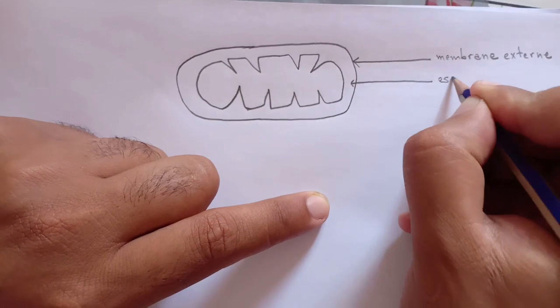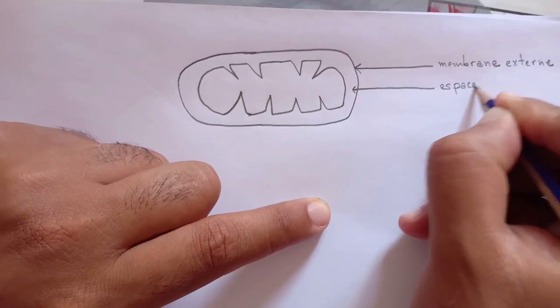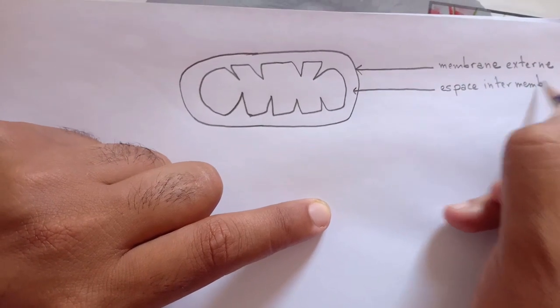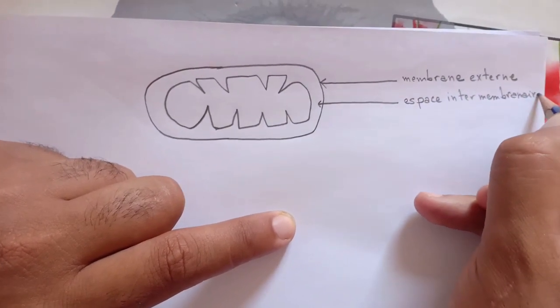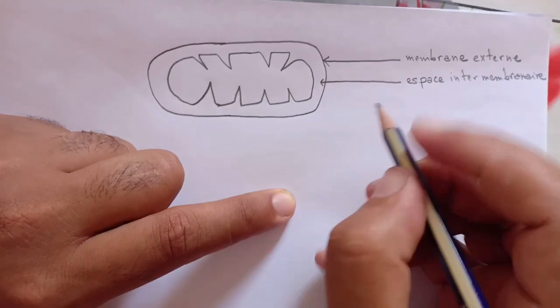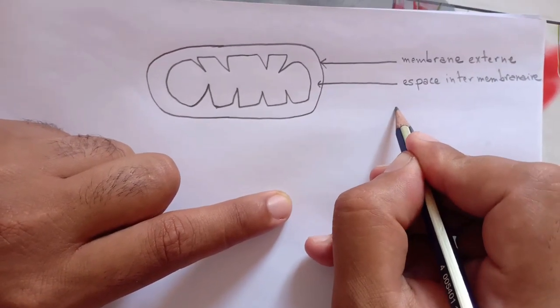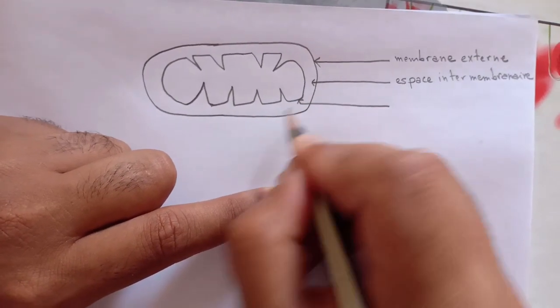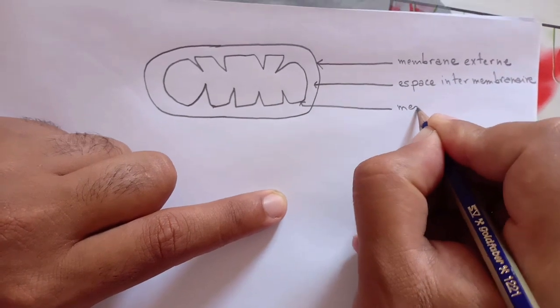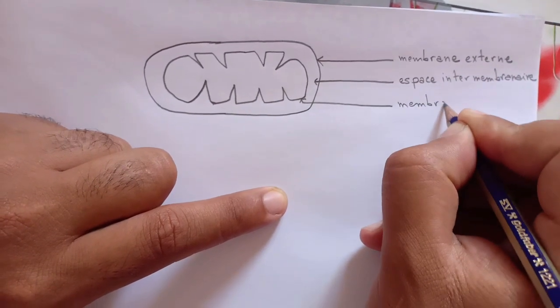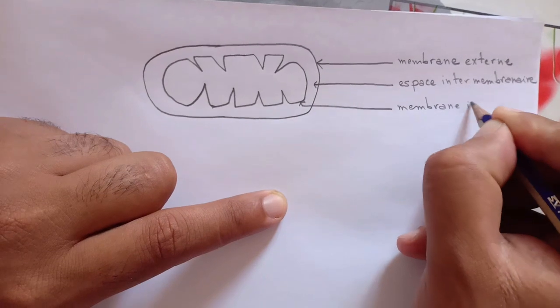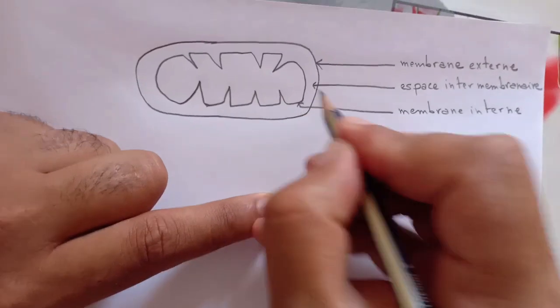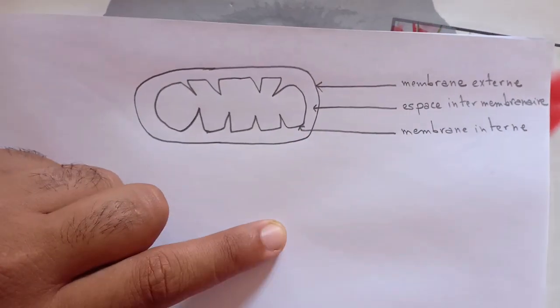Ça, c'est un espace intermembranaire. Et ça, c'est la membrane interne. Comme je l'ai déjà dit, la tête de la flèche doit être située sur l'élément.